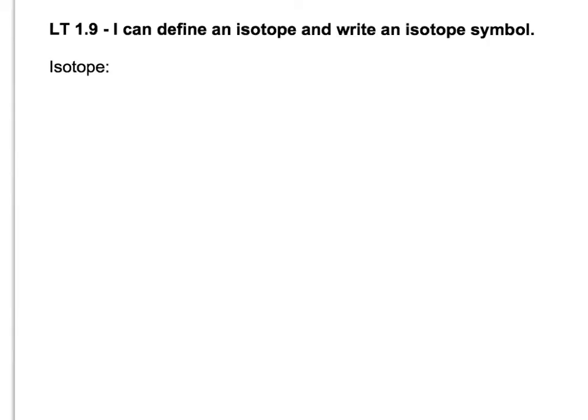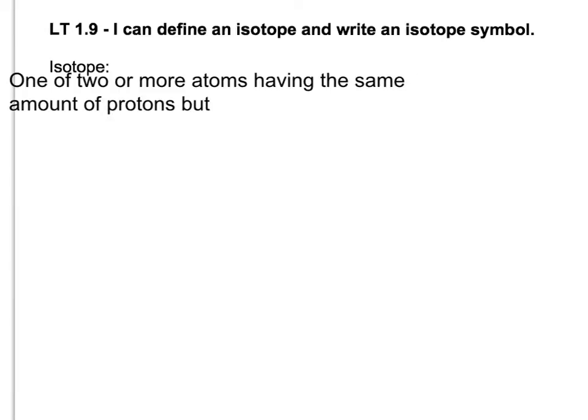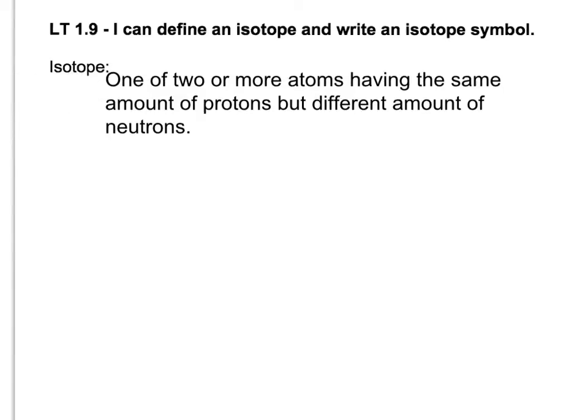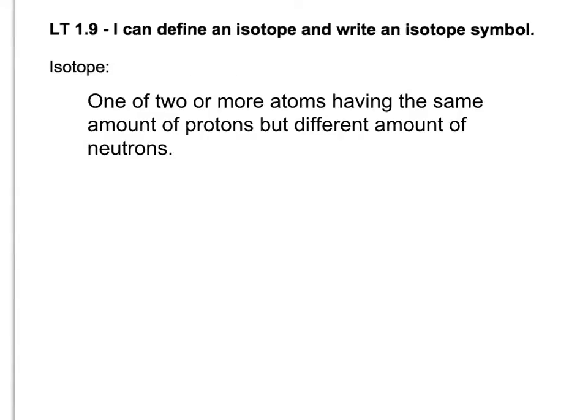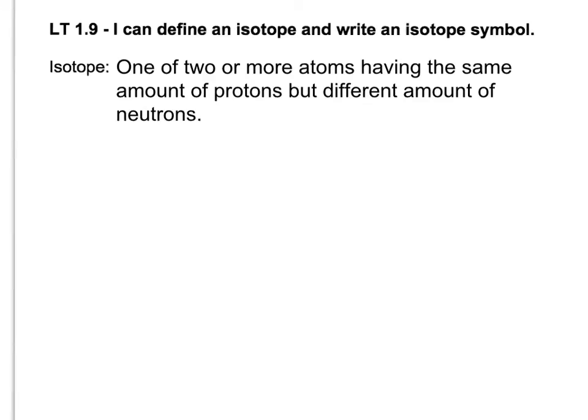So an isotope is one of two or more atoms having the same amount of protons but differing or different amounts of neutrons. One of two or more atoms having the same amount of protons but different amount of neutrons.